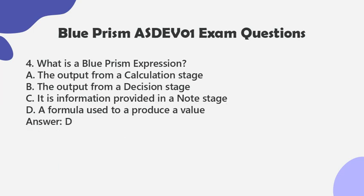Question 4: What is a Blue Prism expression? a. The output from a calculation stage. b. The output from a decision stage. c. It is information provided in a note stage. d. A formula used to produce a value. Answer: D.